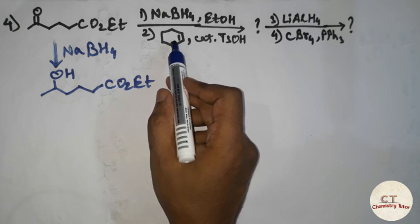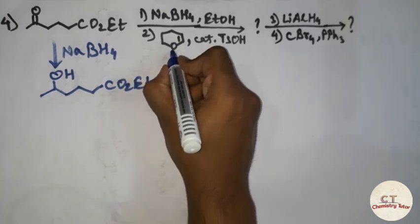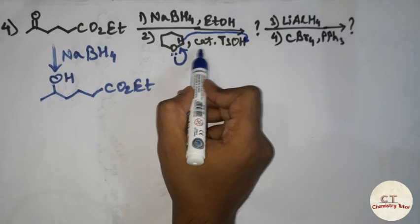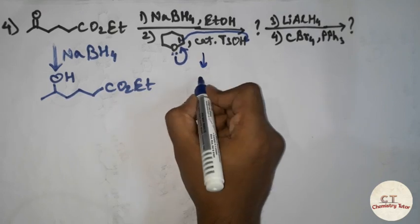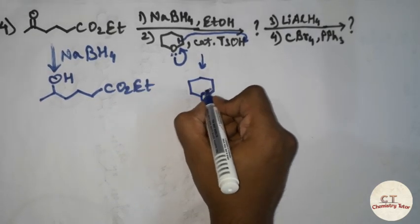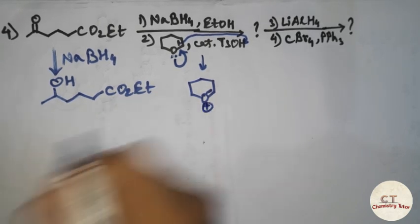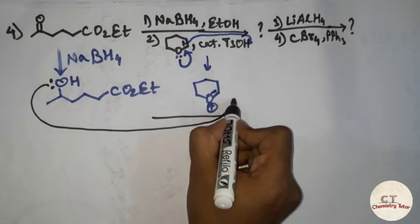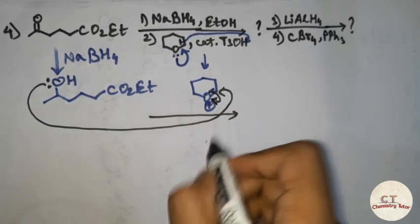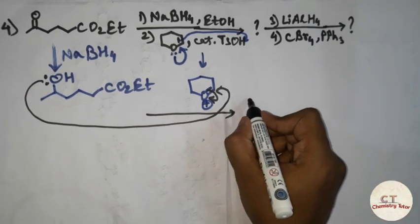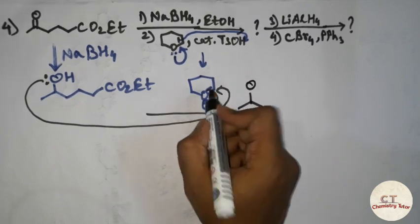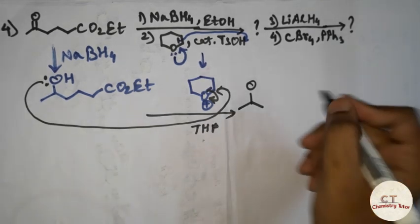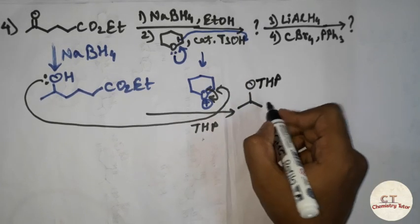In the next step, the lone pair over the oxygen atom is going to move here and this double bond is going to abstract a proton from the solution. There will be a double bond forming and here will be a positive charge. Then the lone pair on this oxygen atom is going to attack here and the positive charge will be removed. The product after removal of the double bond will become tetrahydropyran — THP.